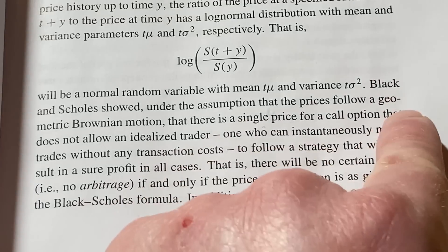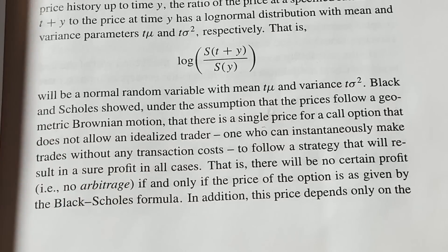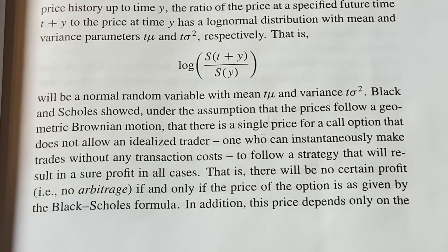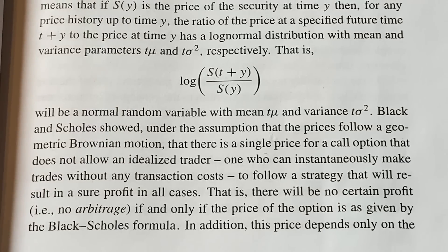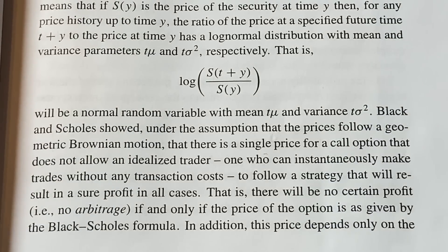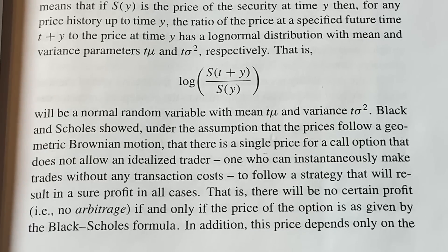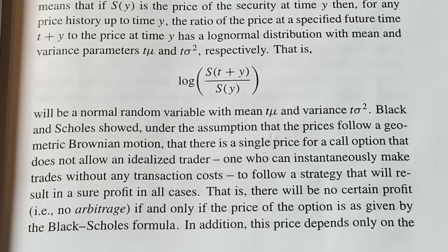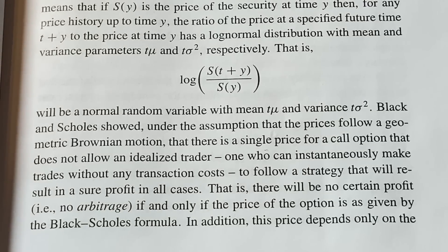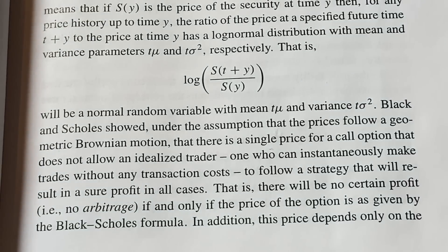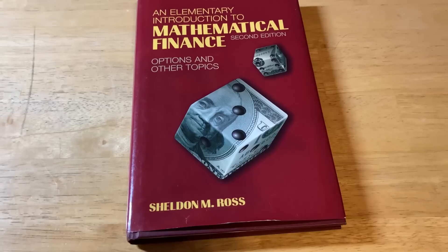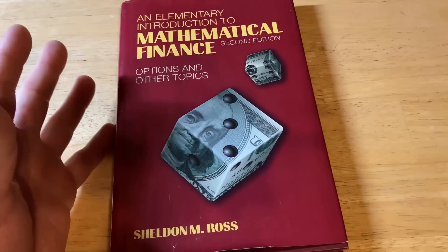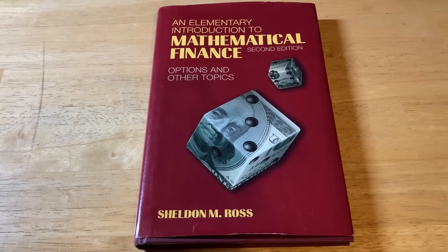Here's where it gets interesting. Black and Scholes showed, under the assumption that prices follow a geometric Brownian motion, that there is a single price for a call option that does not allow an idealized trader — one who can instantaneously make trades without transaction costs — to follow a strategy resulting in a sure profit in all cases. That is, no arbitrage. This holds if and only if the price is given by the Black-Scholes formula. Black and Scholes both won the Nobel Prize for this result.